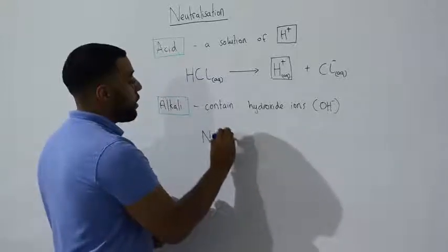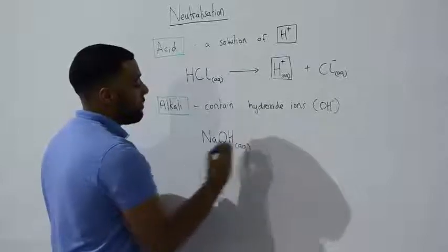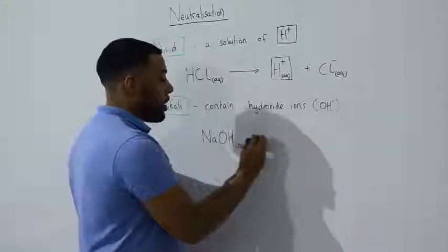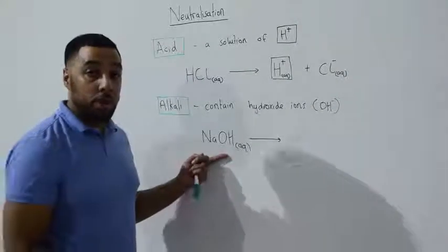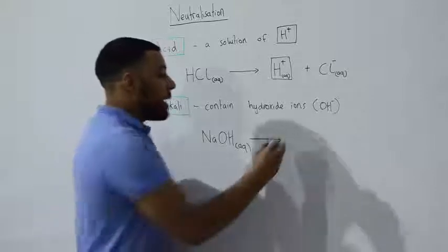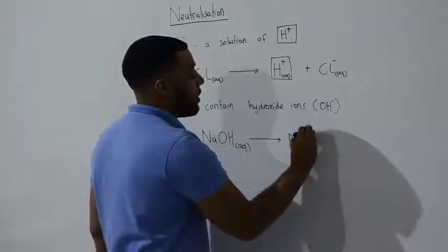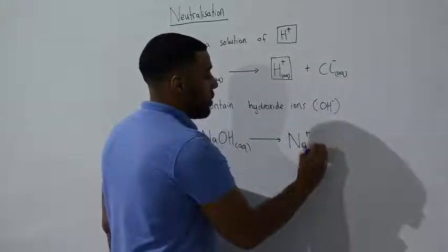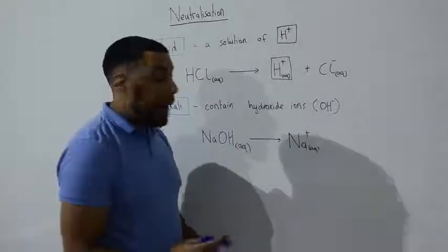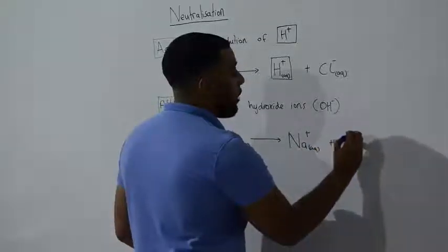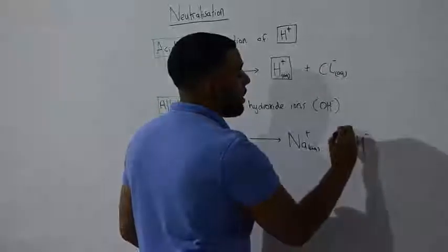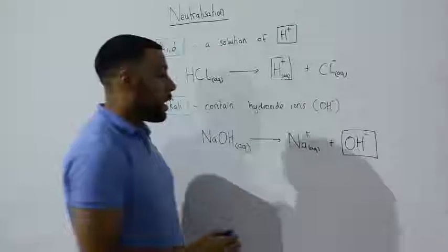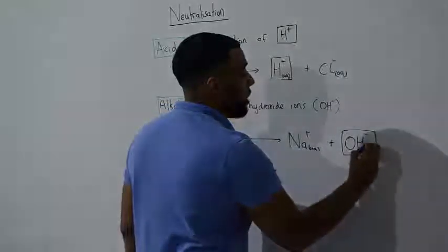Well, let's look at what happens when we dissolve an alkali in water. Here I've got sodium hydroxide and it's aqueous. It can dissolve in water. Now when I dissolve my sodium hydroxide in water, we're going to get two ions forming. We're going to form a sodium ion, which is aqueous, and we're also going to form our hydroxide ion. The ion is present in all alkalis. And this is also aqueous.